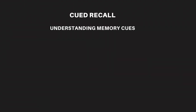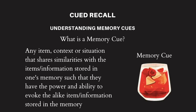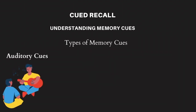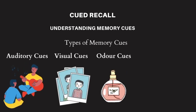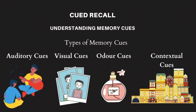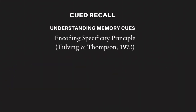Let's dive a little deeper into memory cues and understand how they impact memory retrieval and recall. Memory cues are any item, context, or situation that share similarities with items or information stored in one's memory, such that they have the power to evoke those associated items and information — such as the memory cue of rosé that we just observed. Memory cues can be of various types: auditory memory cues, visual memory cues, odor-based or smell-based memory cues, and contextual memory cues.